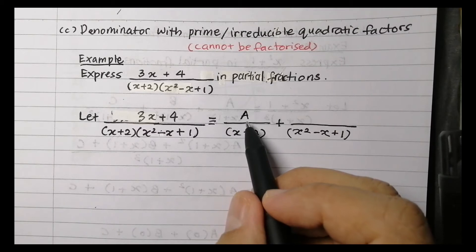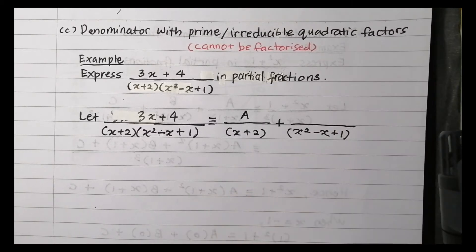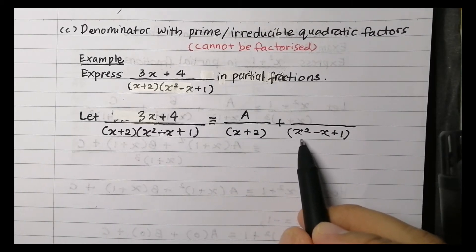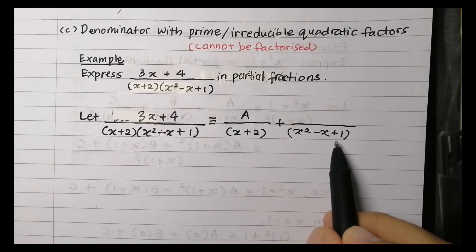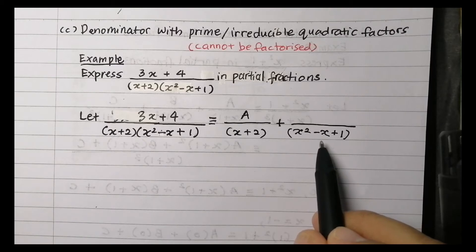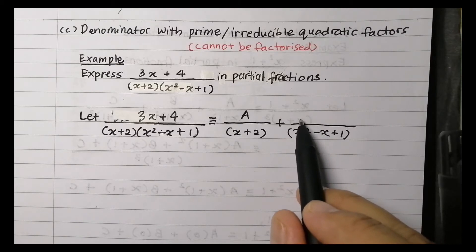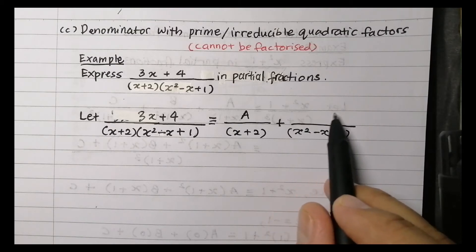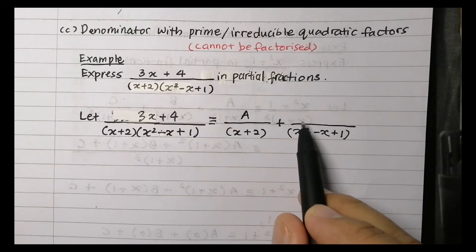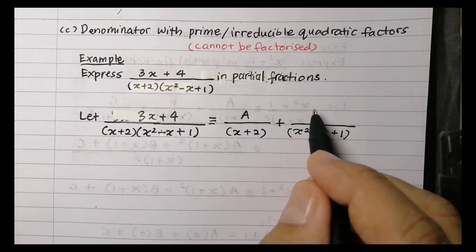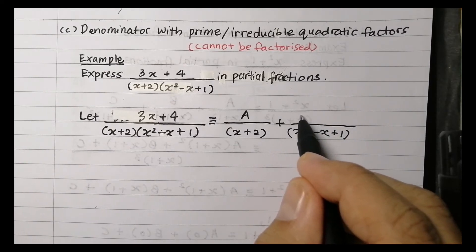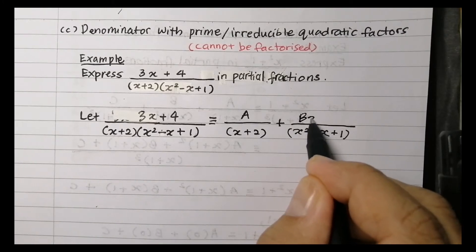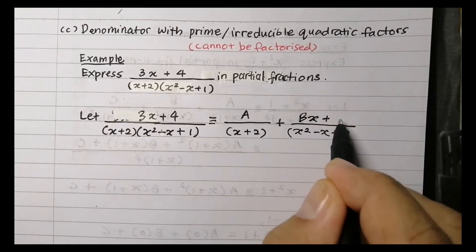So here for X plus 2, the numerator is constant, so write A. Then for the irreducible quadratic function, its numerator is a linear function, so represent the linear function as BX plus C.